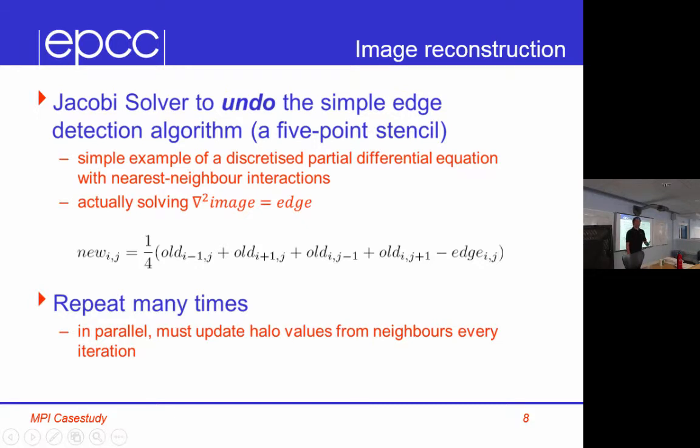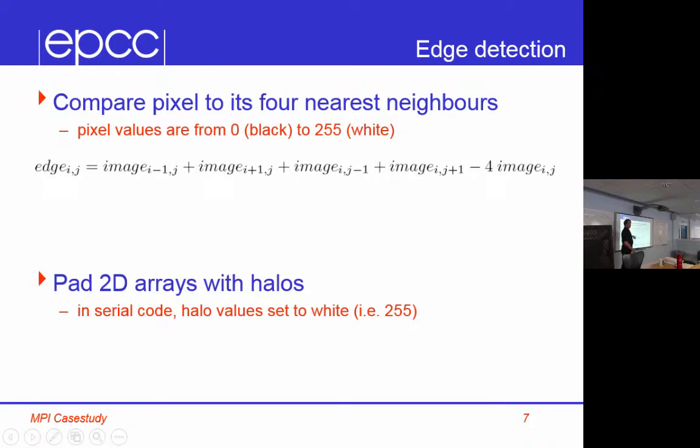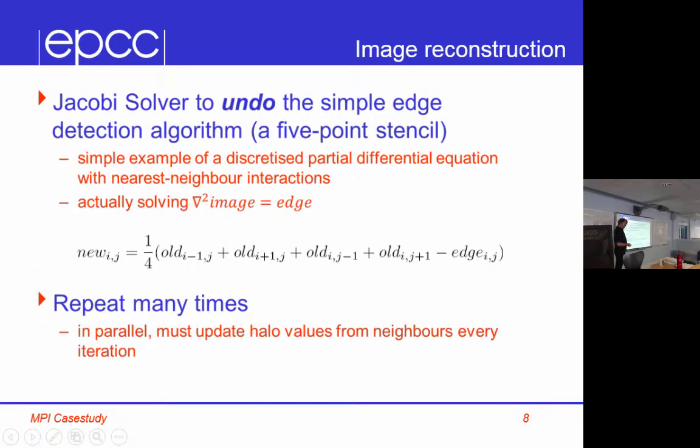So it turns out that actually what I've said is the edge is grad squared image. I'm just saying the edge is the second derivative of the image. So if the image is not changing or changing linearly, I don't call that an edge, but if it's accelerating up or going down, then that's fine. So this is just a very simple standard discretization for the second derivative in two dimensions. So I'm just saying edge is the second derivative of the image. So if you don't have a maths background, it doesn't matter. This doesn't have any impact on what you actually do, but this explains why you can undo it.